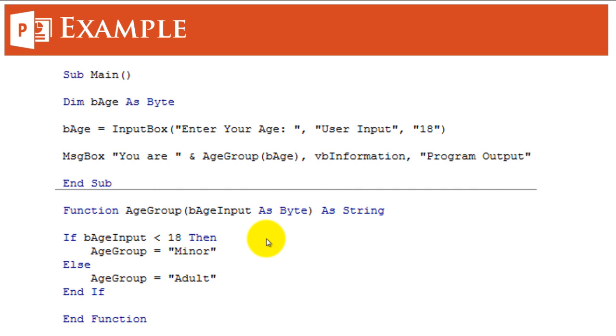Now one thing you need to notice here is that the name of the function and the name of the output are same here. When you want your function to return a value, you need to have the function name and the output name same.